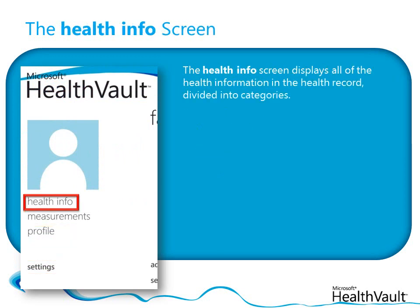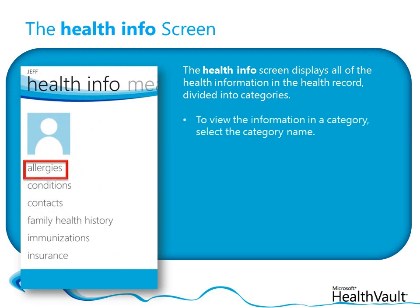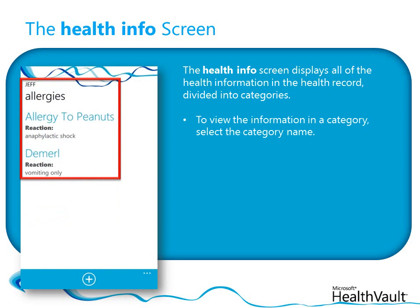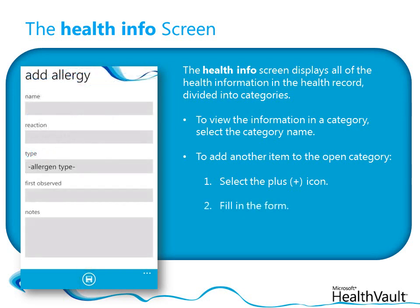The HealthInfo screen displays all of the health information that you've added to the HealthRecord, divided up into broad categories, such as Allergies, Conditions, Immunizations, Insurance Information, and Emergency Contacts. To view the entries in a category, select the category title. Here you can see the entries in this HealthRecord's Allergies category. You can add another entry to the category by selecting the plus icon at the bottom of the screen, filling in the form with the information that you want to add, and then selecting the save icon.